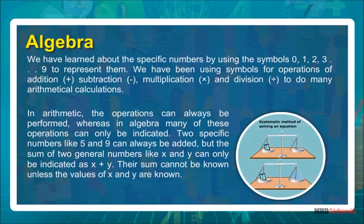We have learned about specific numbers by using the symbols 0, 1, 2, 3, and so on up to 9 to represent them. We have been using symbols of operations of addition, subtraction, multiplication, and division to do many arithmetical calculations. In arithmetic, the operations can always be performed, whereas in algebra many of these operations can only be indicated. Two specific numbers like 5 and 9 can always be added, but the sum of